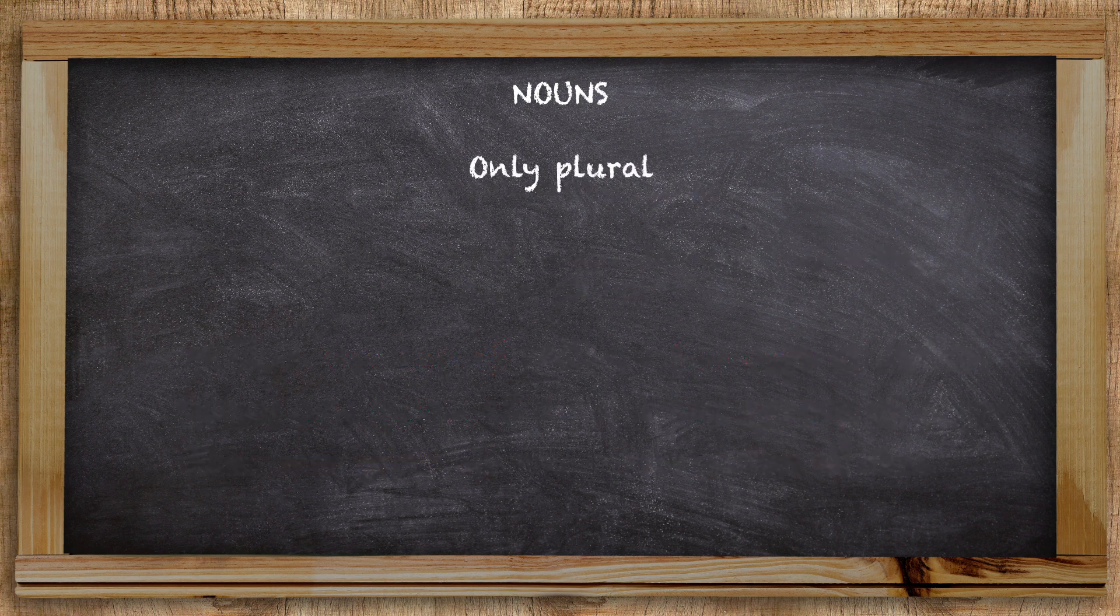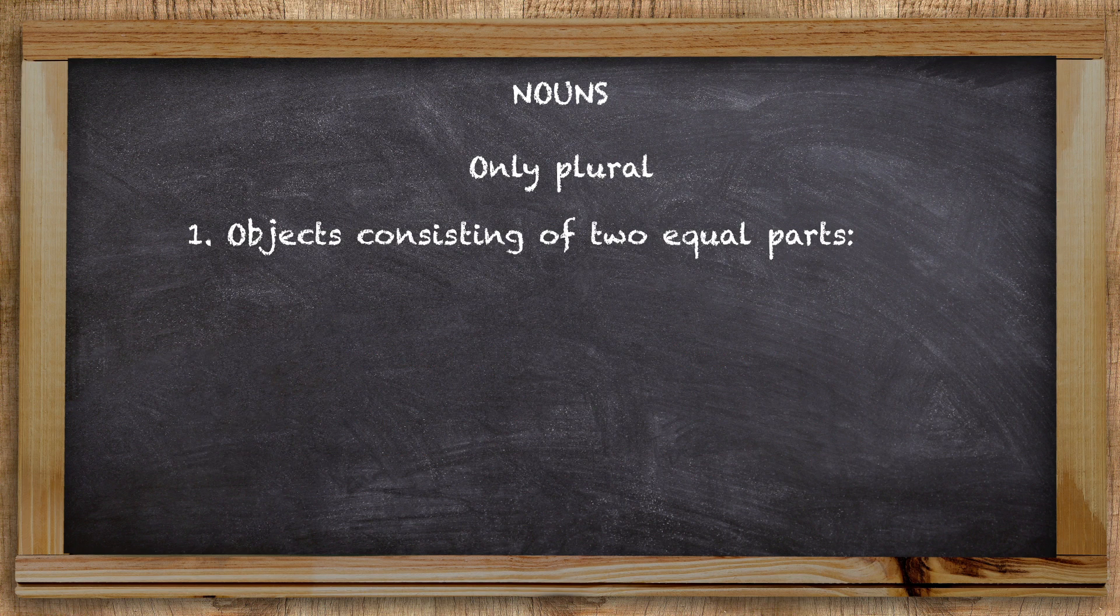Some words only take a plural form. An example of these are words that refer to objects consisting of two equal parts. Think of trousers, jeans, glasses and scissors.